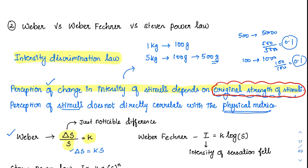So the just noticeable difference changes according to the initial intensity of the stimuli. However, this law was not applicable to all different stimuli. So Fechner, Weber's student, came along with another law. He said it is not a constant — it is the logarithm of the intensity. The intensity of stimulus change is directly proportional to the log of the stimulus. He modified the Weber law slightly.